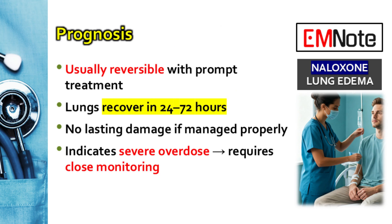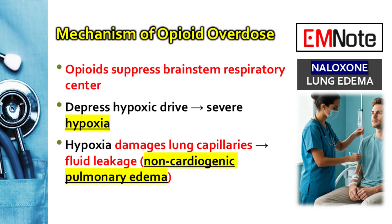What's the prognosis for these patients? With prompt and aggressive supportive care, lung function typically recovers within about 24 to 72 hours — that rapid turnaround is a hallmark of this condition. The overall prognosis is generally excellent. This is a reversible condition, and patients usually make a full recovery without any long-term lung damage. It really shows how effective immediate medical care is. I'll leave you with a question: knowing that a patient can look better and then suddenly crash, how does the risk of FPE change your protocols for patient observation after giving naloxone?